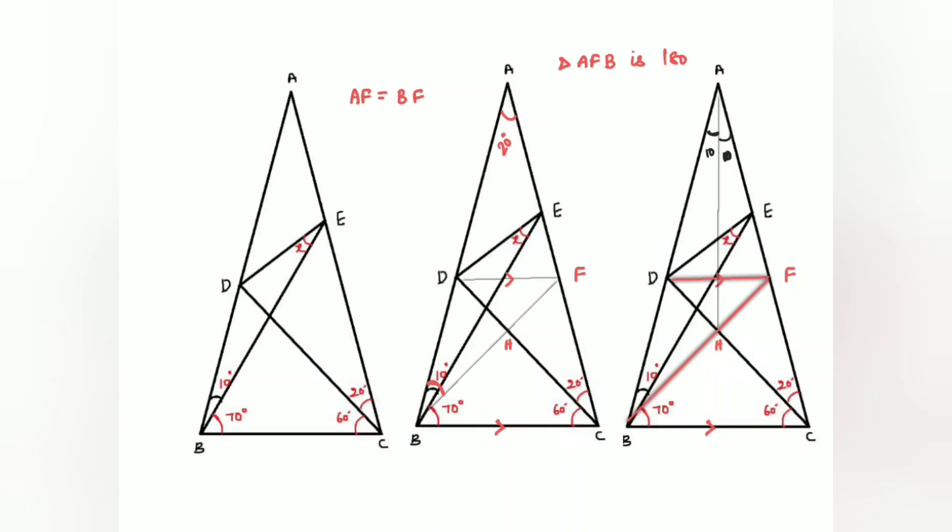Now look at triangle BAH, or ABH. This angle is 20 here, this one is 10. Obviously, this is the remaining 150 degrees. And also look at triangle AEB.